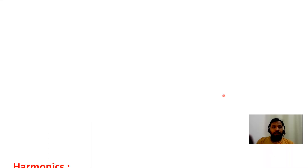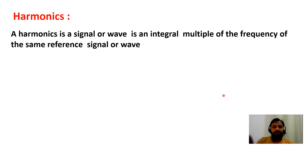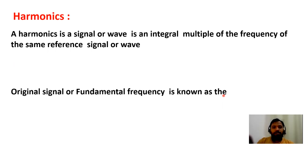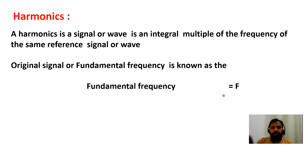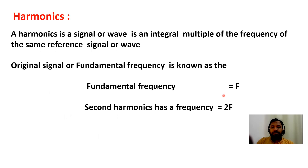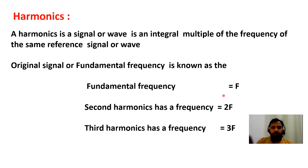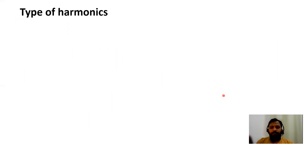First, what is a harmonic? A harmonic is a multiple — it is a signal or a wave that is a multiple of the fundamental frequency. If the fundamental frequency is f, then the second harmonic is 2f, third is 3f, fourth is 4f. These — 2f, 3f, 4f — are all called harmonics.